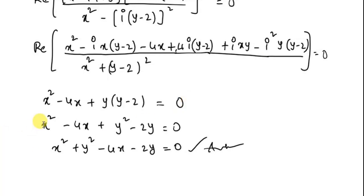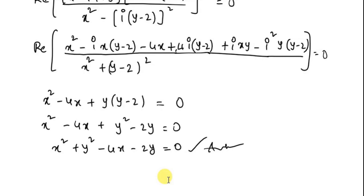Since i squared equals minus 1, substituting and collecting the real parts: x squared minus 4x plus y(y minus 2) equal to 0, which gives x squared plus y squared minus 4x minus 2y equal to 0. This is the locus.